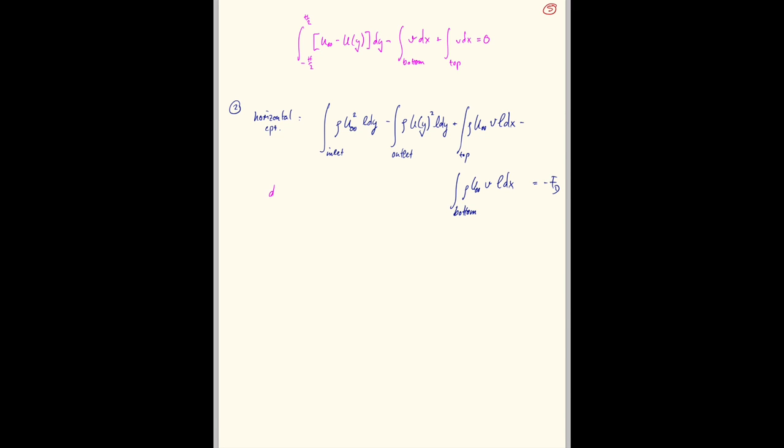So divide by rho L and simplify, and we get plus now the integral here, which is similar to the mass conservation one, just with an extra power of the velocities, which is u infinity squared minus u of y squared, equals minus fd divided by rho L.